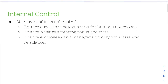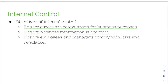The three objectives of internal control are: first, to ensure assets are safeguarded for business purposes — you want to make sure they are safe, secure, and used appropriately; second, to ensure that business information is accurate, both for management and for investors and creditors; and third, to ensure employees and managers comply with laws and regulations, such as Sarbanes-Oxley. Those are the objectives of internal control.